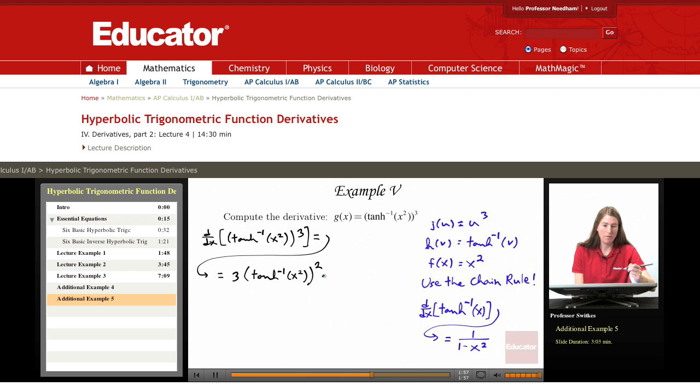Times derivative of inverse hyperbolic tangent of x squared. That will give us one over one minus innermost function squared, so one over one minus x squared squared, times by the chain rule, derivative of x squared, which is 2x.